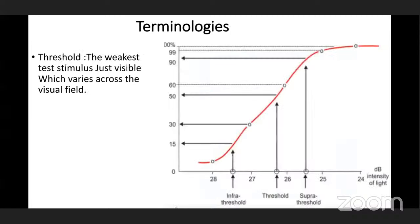The first terminology is threshold — the weakest test stimulus just visible, which varies across the visual field. In layman's terms, if light is thrown 100 times and appreciated 50 times, that is the threshold. If seen 90% of the time, it is supra-threshold; if only 15% of the time, it is infra-threshold.